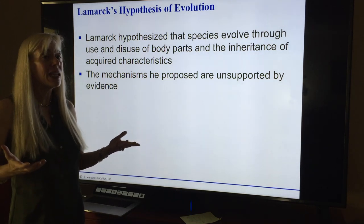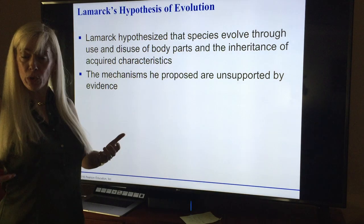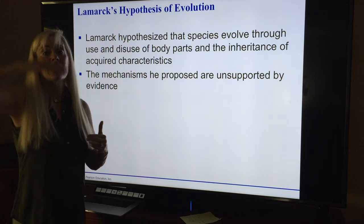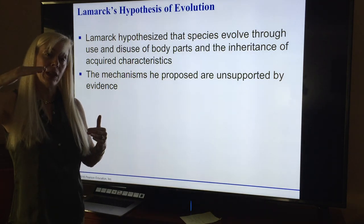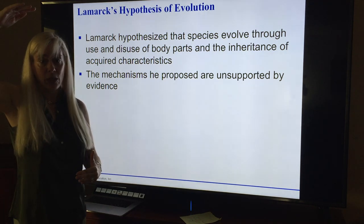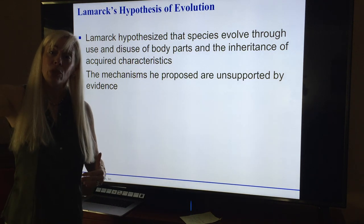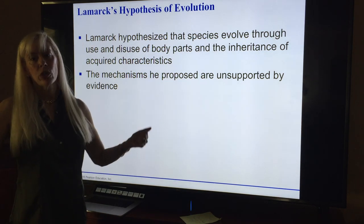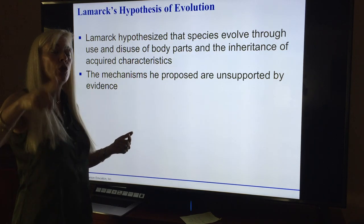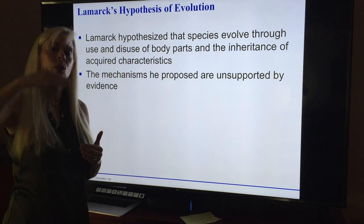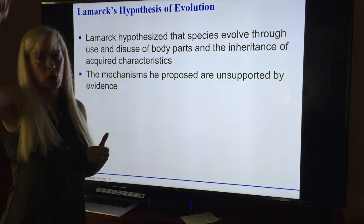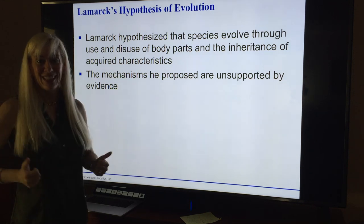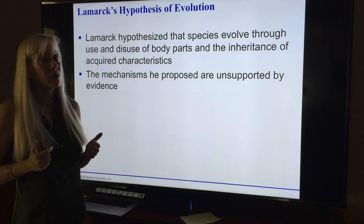His mechanism was incorrect, but the fact that he understood evolution occurred was a big deal. What actually happened — as you know because you passed the bio EOC — is that some giraffes, by genetic mutation, had necks a little bit longer. Because their necks were longer they could reach higher leaves, giving them a larger food source. Being healthier, they could reproduce more, passing those genes on, and that's how giraffes over time developed longer necks.